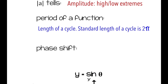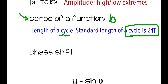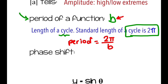The period of a function is how long a cycle is — how long it takes for the sine or cosine to go through an entire cycle, which is a standard of 2 pi. But it can change, and the period is affected by b. The standard period is 2 pi, and if b is different than 1, you take 2 pi and divide by b to get the period. If b is 1, it's just 2 pi.